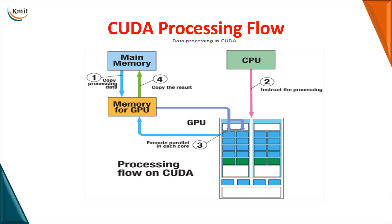In the previous session we only saw a program where you print a statement to the monitor — you did not copy any data from the CPU to the GPU or copy results back. Now, when you want data to be passed between CPU and GPU, you need to first understand the CUDA processing flow, also called data processing in CUDA.